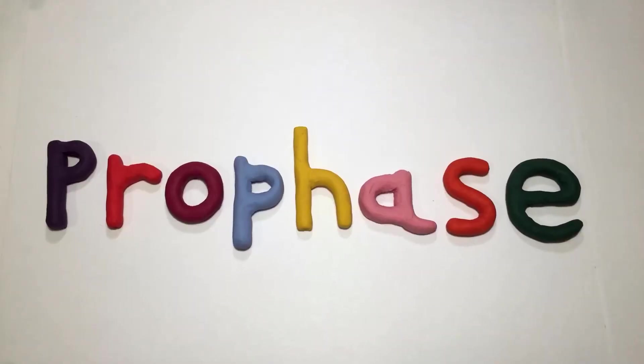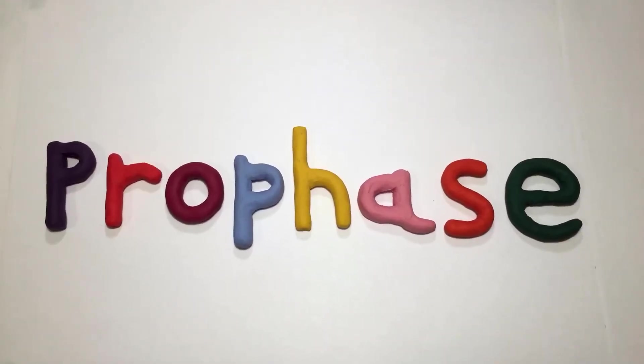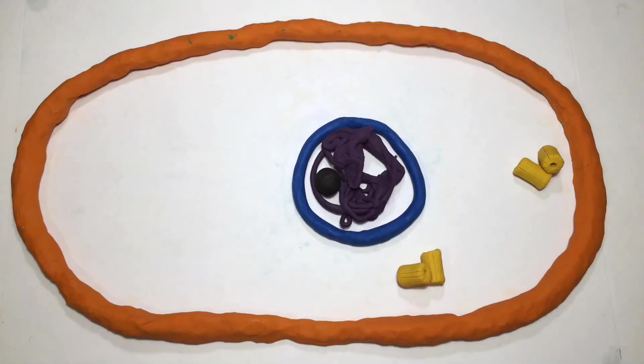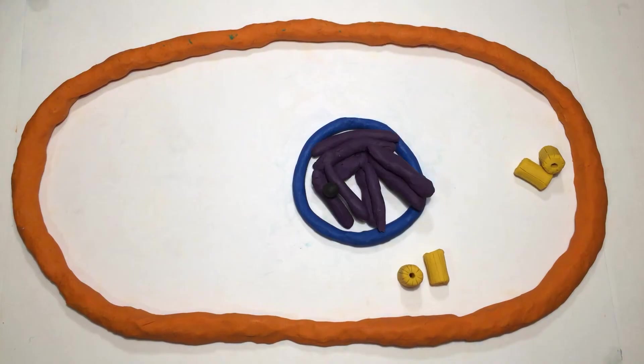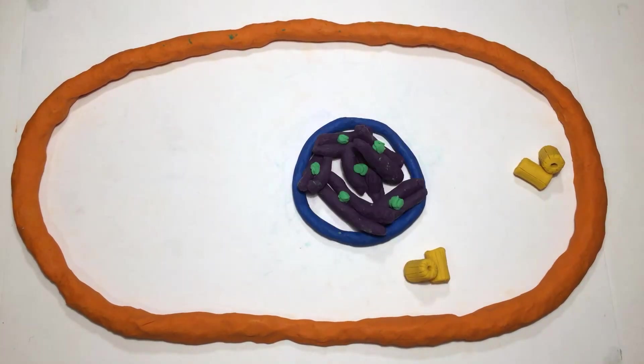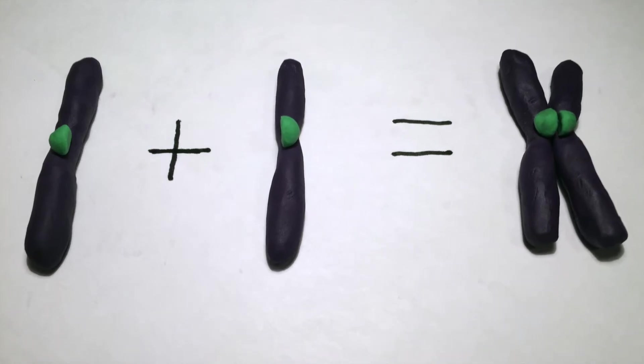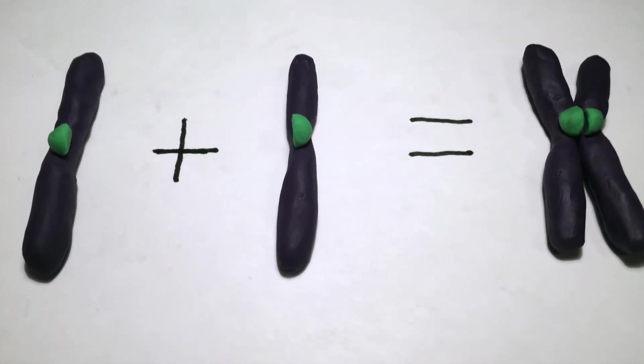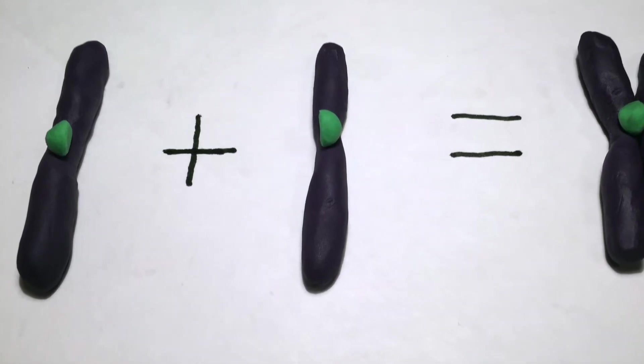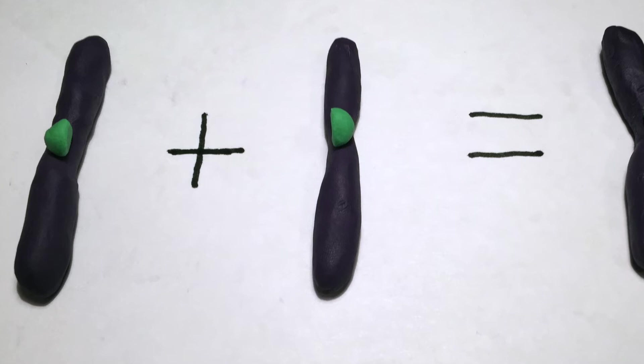The first stage of mitosis is prophase, from the Greek pro, which means before. This is when the loosely packed chromatin condenses into the tightly folded replicated chromosomes you see now. Each replicated chromosome is made up of two sister chromatids that are completely identical. Notice also that both sister chromatids have their own kinetochore, the green blob, which is important for the coming stages.